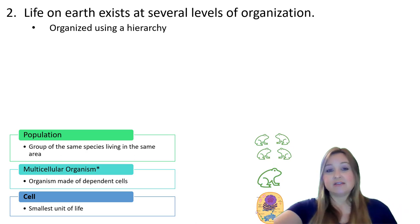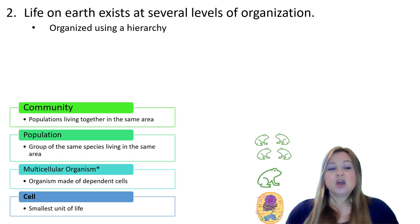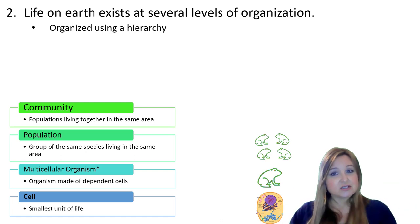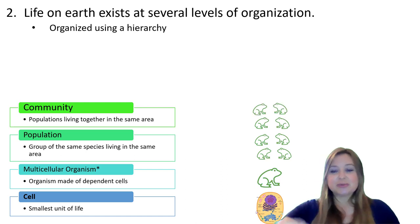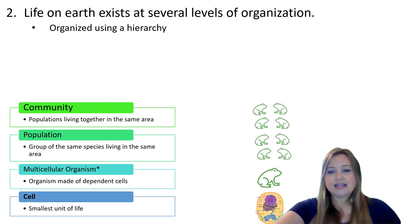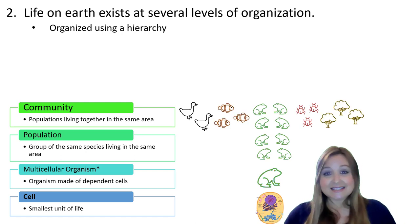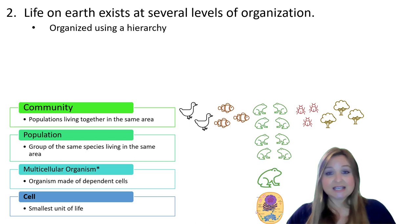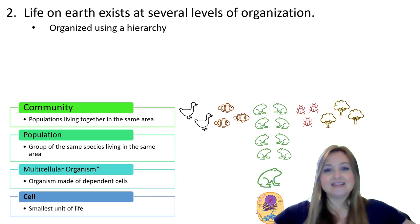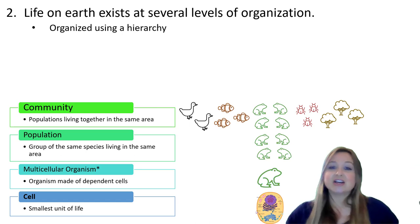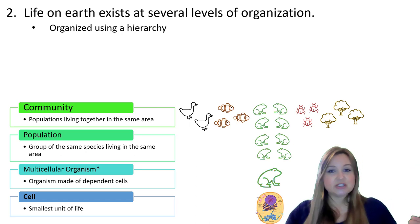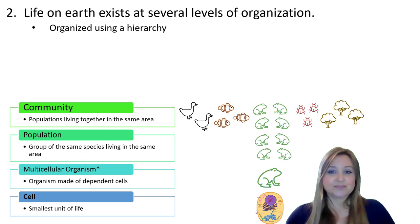The next structural level builds upon this. When we have many populations living together in the same area, we call that a community. Here's a community that has frogs, bugs, fish, trees, and geese — five different populations all living in the same location. When the word 'community' is used, it necessarily means we're talking about different populations living in the same area.